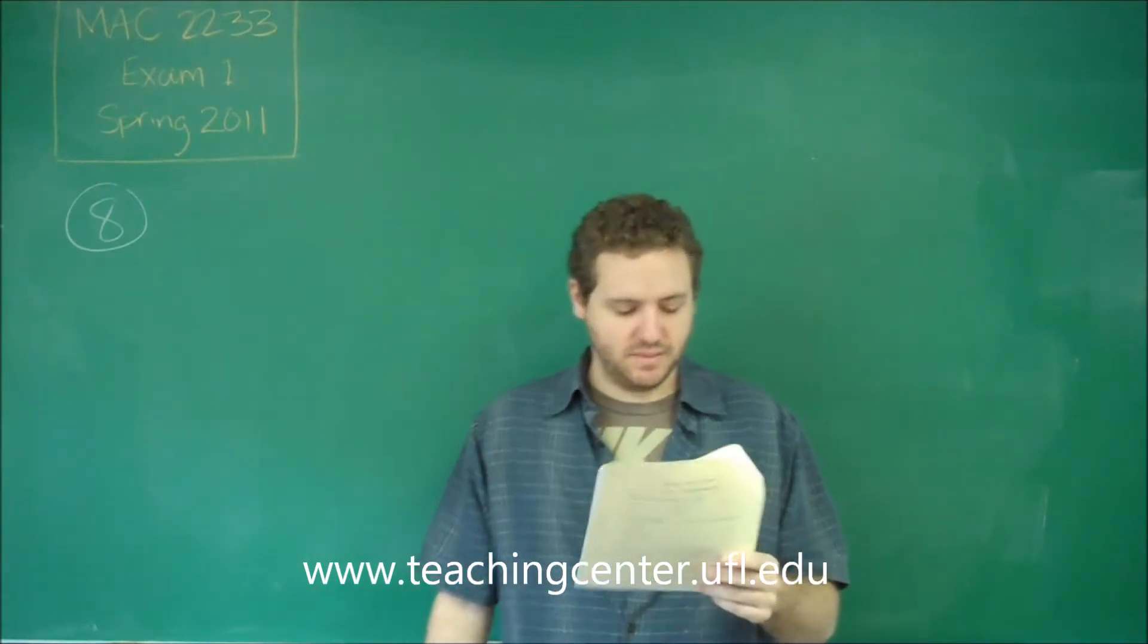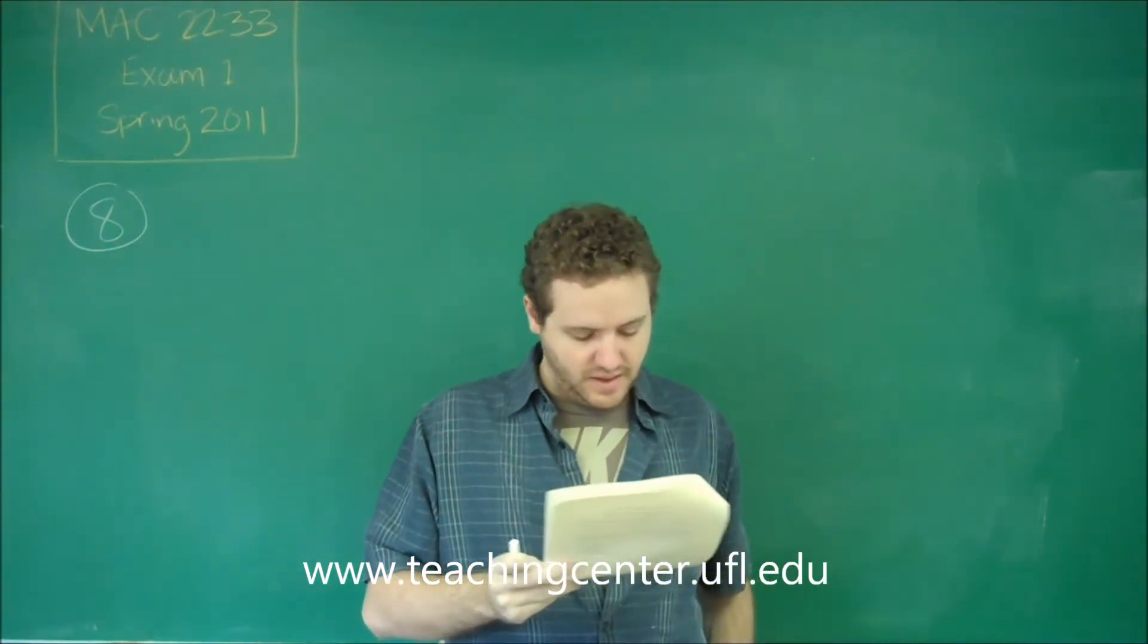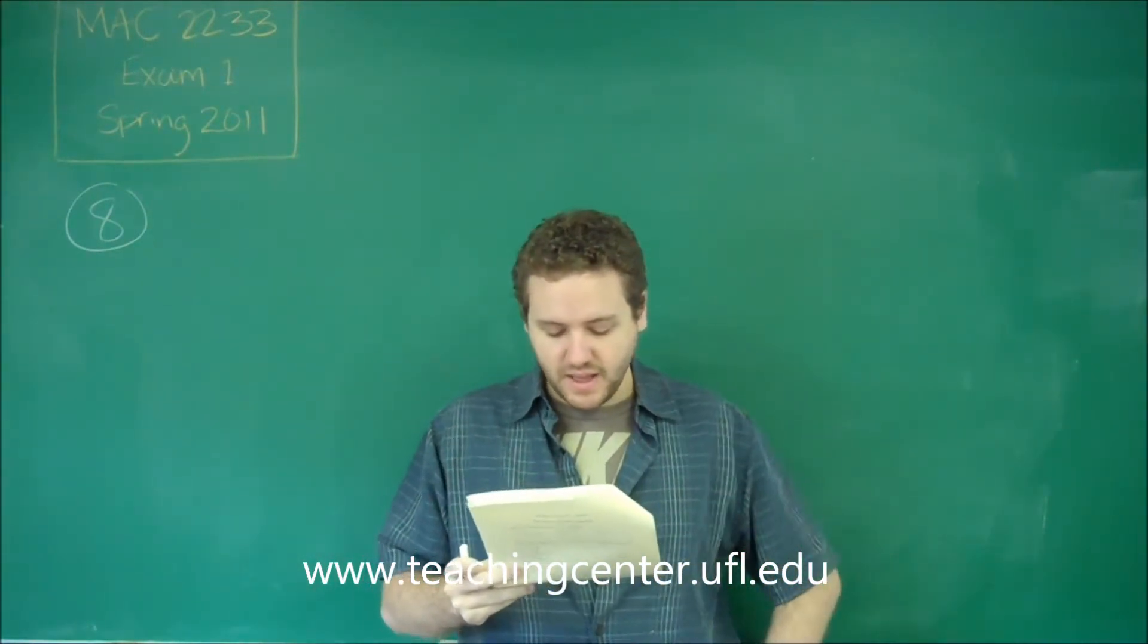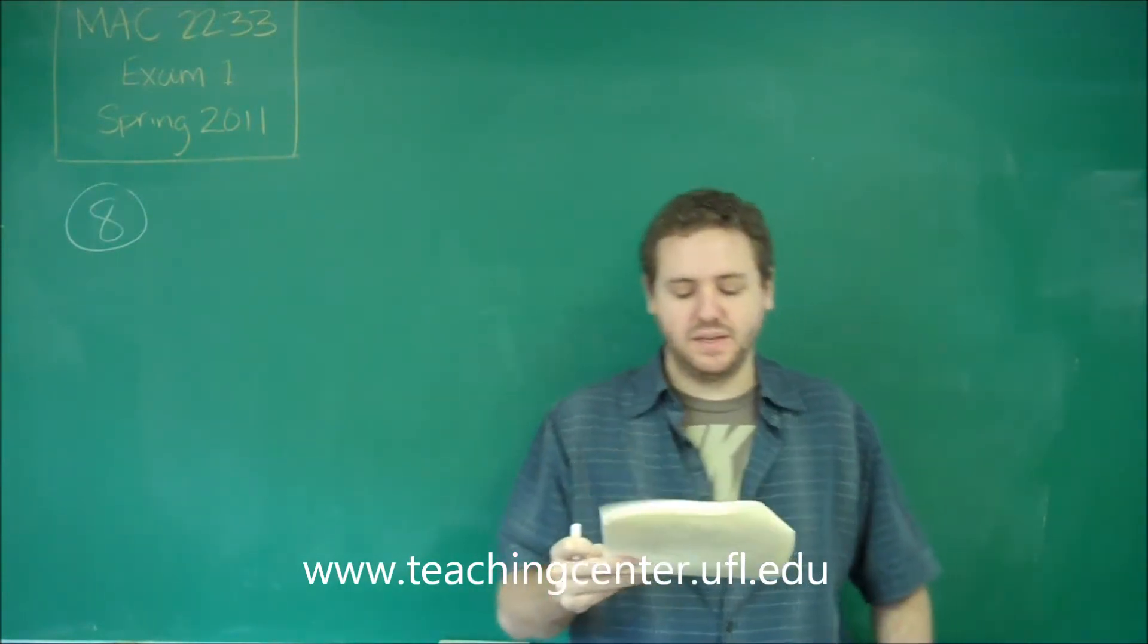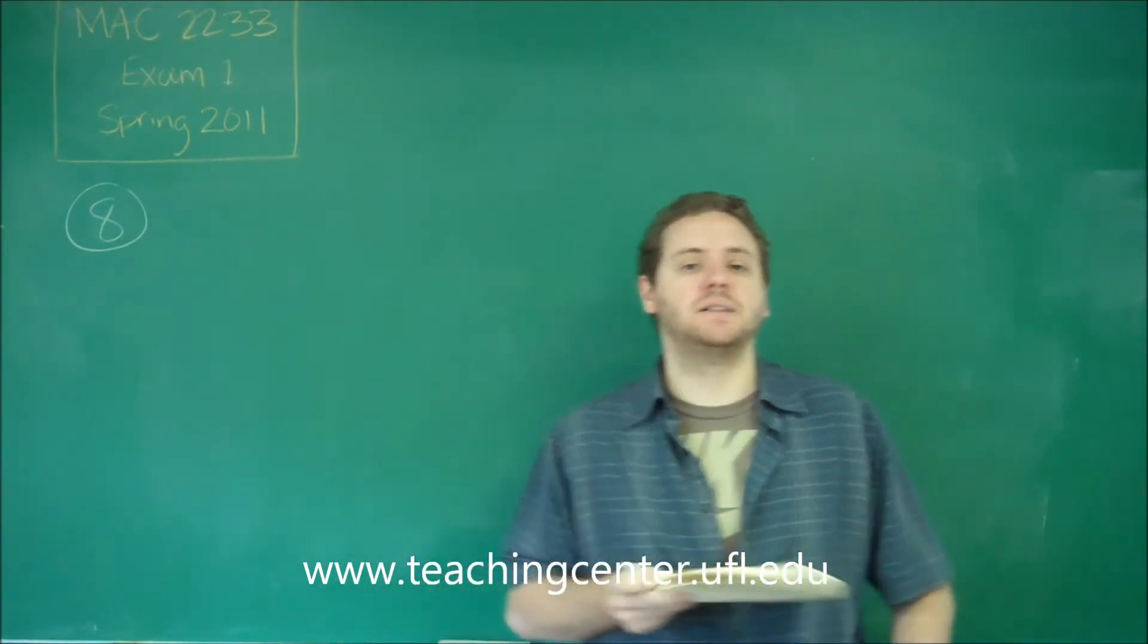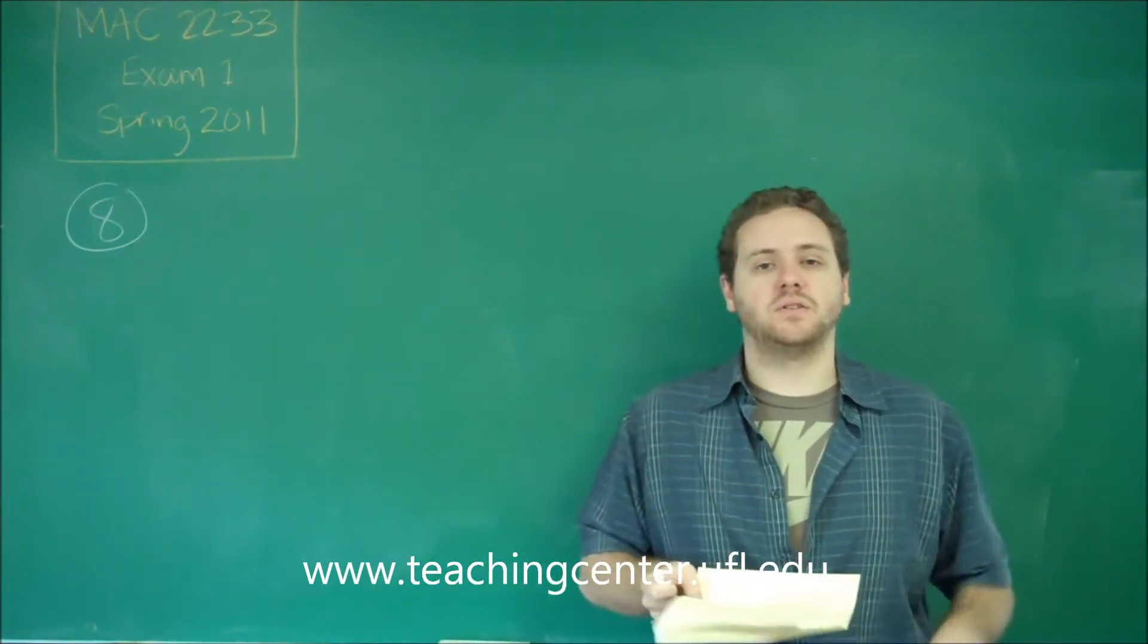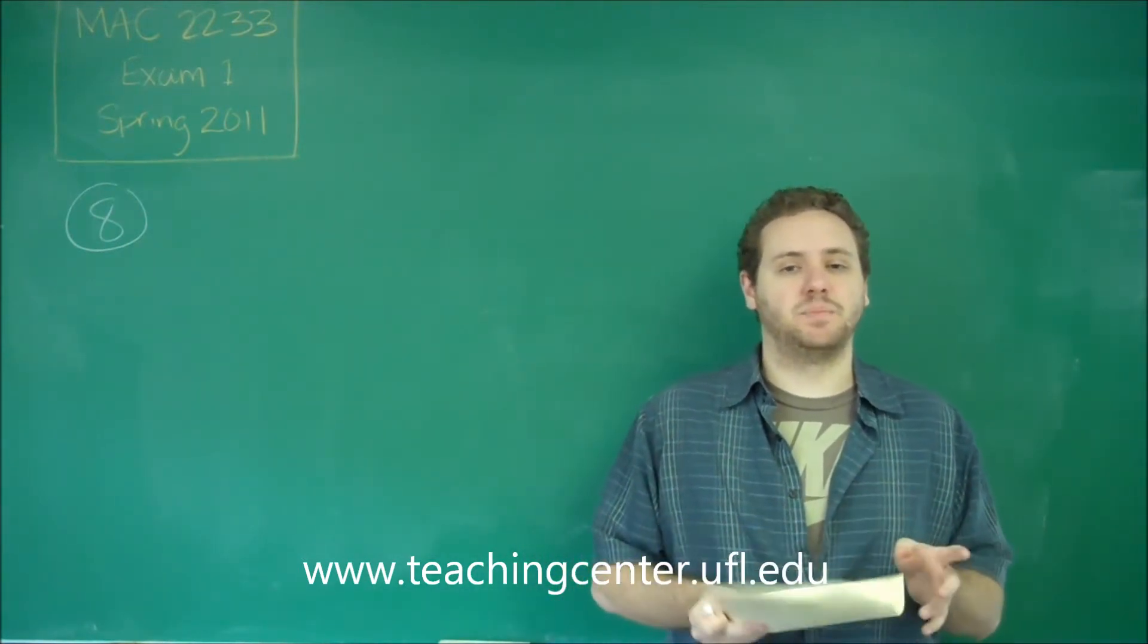So number eight is testing some concepts about lines. We want to find the value of K such that the line passing through those two points is perpendicular to another line. Remember that two lines being perpendicular means their slopes have to be the negative reciprocals of each other.